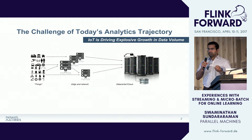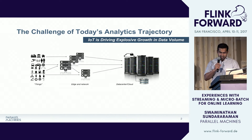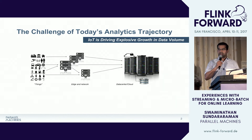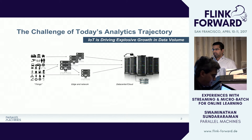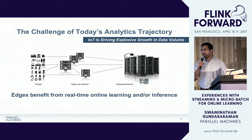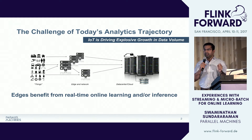So we need to shorten the round trip time for data to go from the things to creating some meaningful inferences or decisions on this real-time data. That's where the edge or the network comes in — we place processing near the things so they can take streams of data, create intelligence from it, and automatically take actions. Because of IoT, this requires online learning in order to make meaningful real-time decisions.